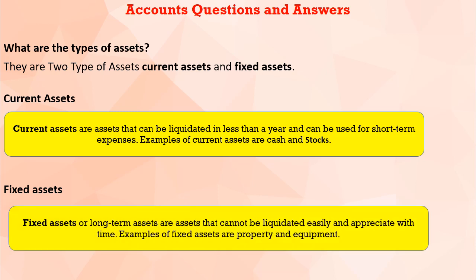Fixed assets are long-term assets that cannot be liquidated easily and appreciate with time. Examples of fixed assets are property and equipment. Fixed assets we cannot convert easily into cash. It is possible but it takes a certain period of time — for example, for land, we are not going to make money tomorrow; it will take some time. That is where fixed assets come in — land, machinery, properties, equipment — that is fixed assets.